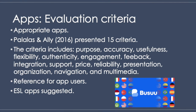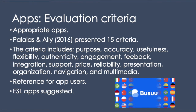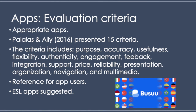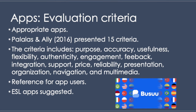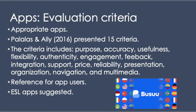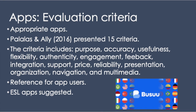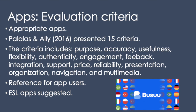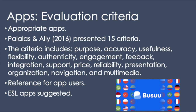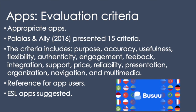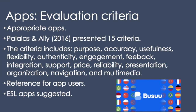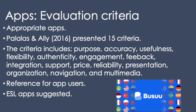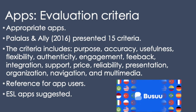The criteria includes purpose, accuracy, usefulness, flexibility, authenticity, engagement, feedback, integration, support, price, reliability, accessibility, presentation, organization, navigation, and multimedia. There are a variety of ESL apps suggested by researchers and practitioners, among which can be named Learn English Grammar, Learn English Podcasts, Practice English Grammar, Busuu, Real Deal English, and Sounds: The Pronunciation App Free. In the description box of this video, you can access a document that analyzes three apps using the 15 criteria by Palalas and Ali.